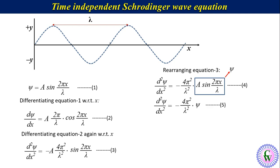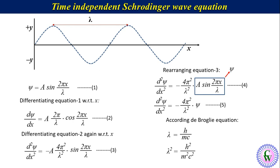According to the de Broglie equation, λ equals h/mc. Making both sides of this equation, λ² equals h²/m²c², equation number 6.